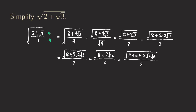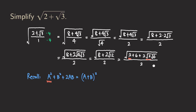Now we need to recall something. Recall that a squared plus b squared plus two times a times b can be factored as the quantity a plus b, squared. Let's compare this with our expression. If we think of a squared as two, then a is the square root of two — because when you square the square root of two you get two. So we match the two here with square root of two here.